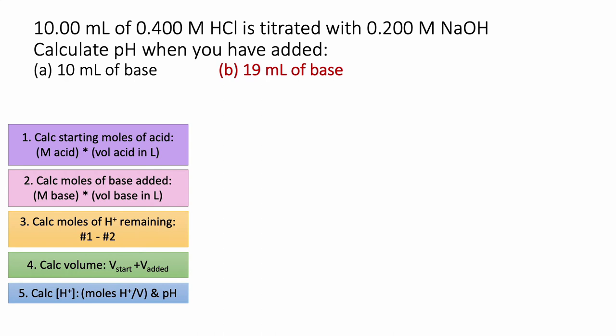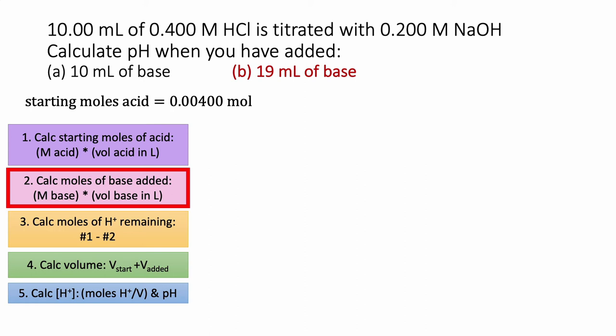Next, we're going to calculate the pH after we've added 19 mils of base. Remember, the equivalence point is expected at 20 mils, so we're getting really close — only 1 mil off. We should have much, much less H+ left. Basically, you've added enough NaOH to neutralize almost all of the H+. The nice thing here is that step one — calculating starting moles of acid — is already done; you don't have to redo it for the same titration.